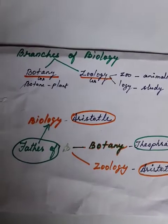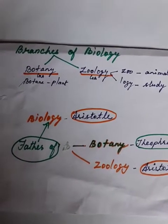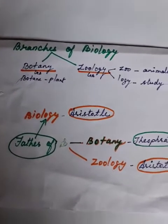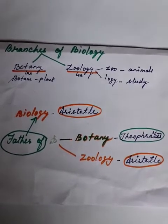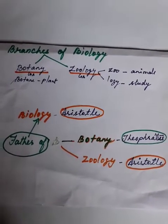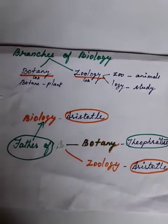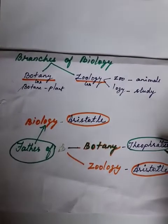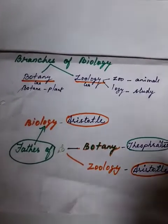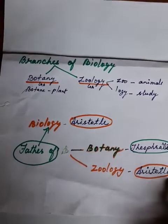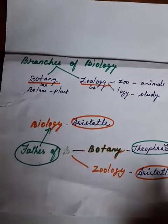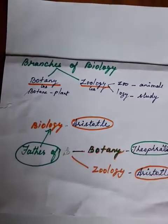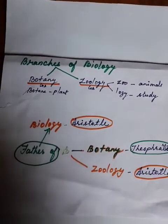You should know who is the father of biology, who is the father of botany, and who is the father of zoology. Father of biology: Aristotle. Father of botany: Theophrastus. Father of zoology: again Aristotle. So Aristotle is known as father of biology as well as zoology.